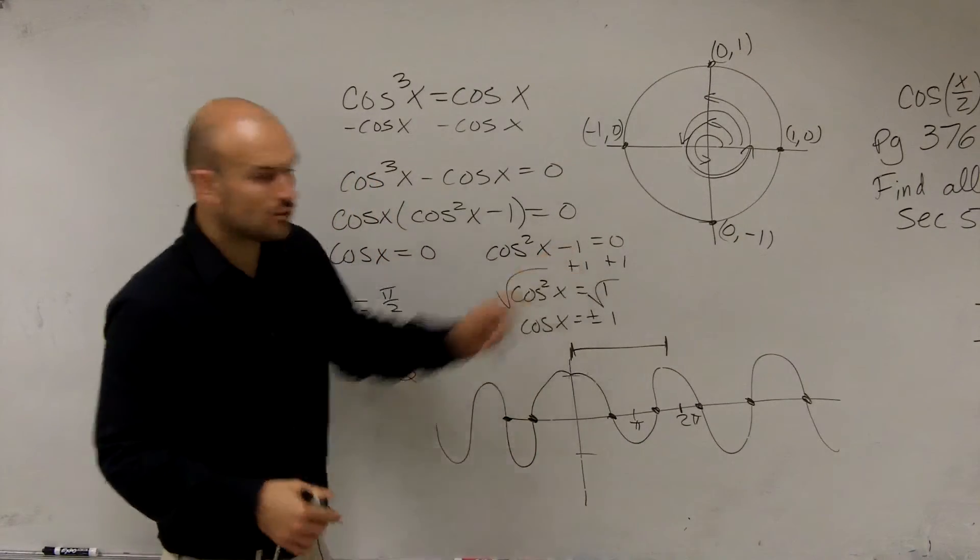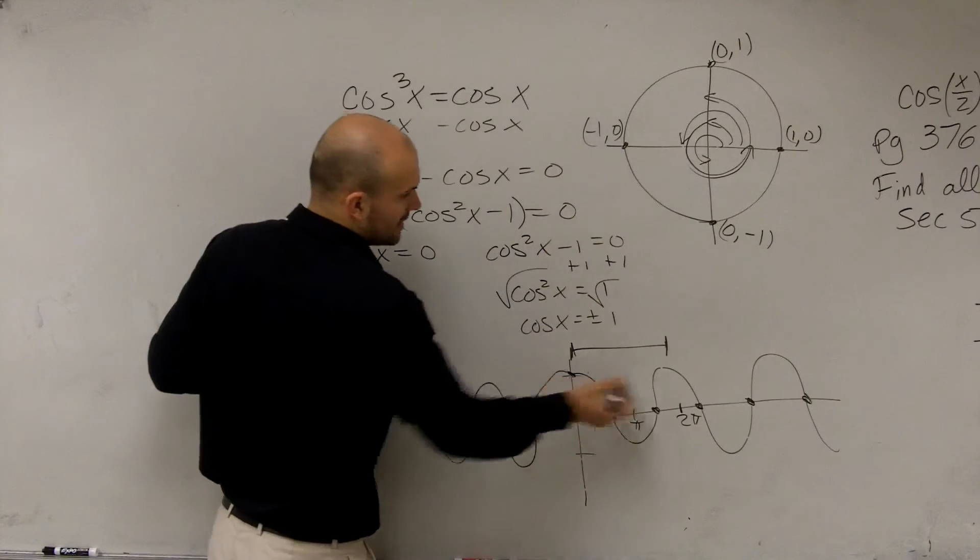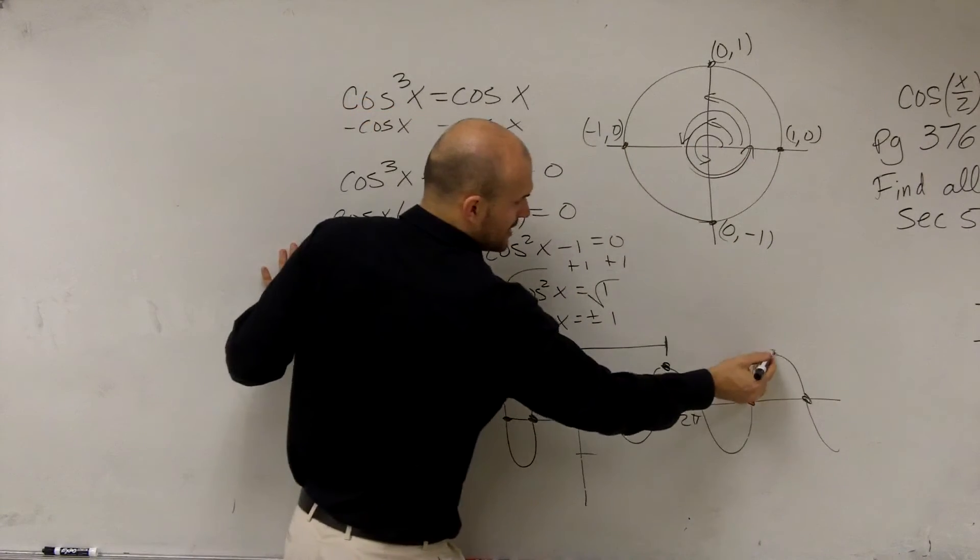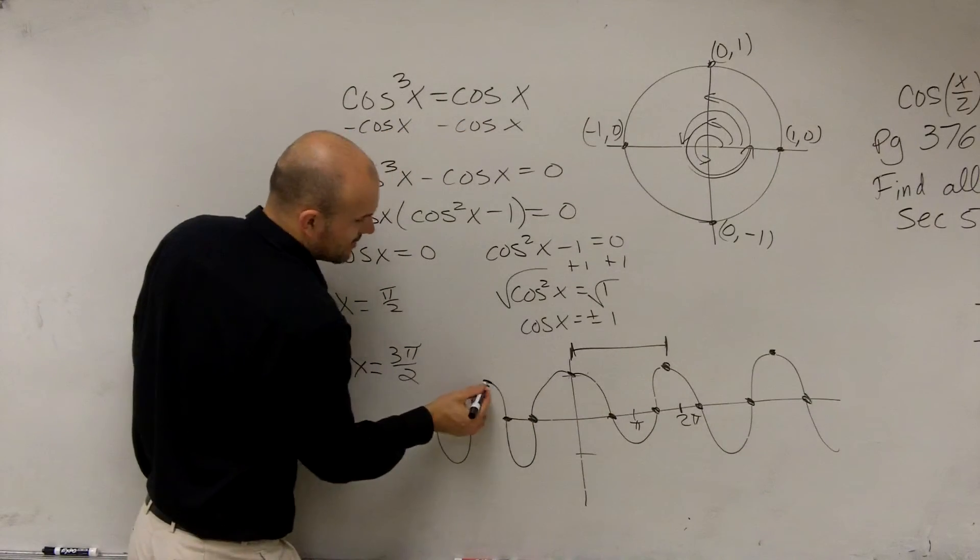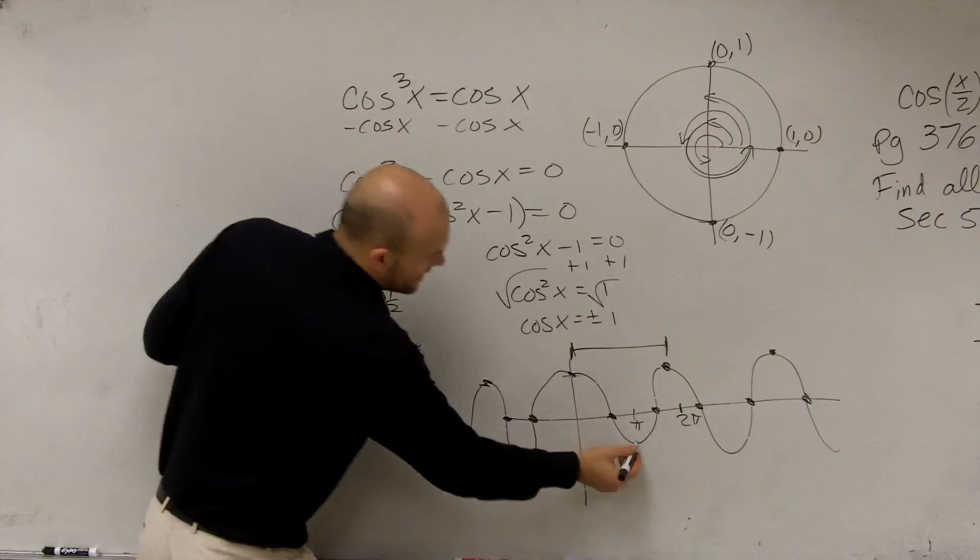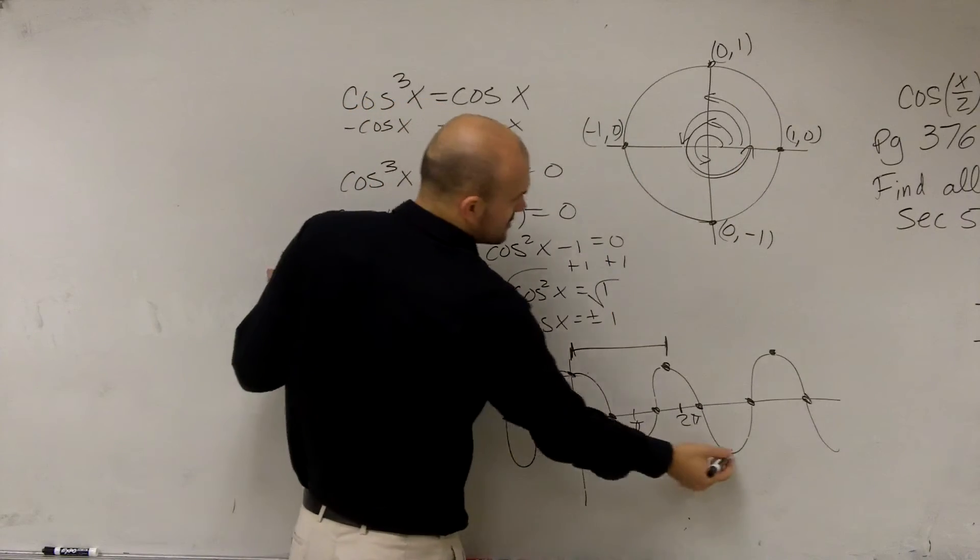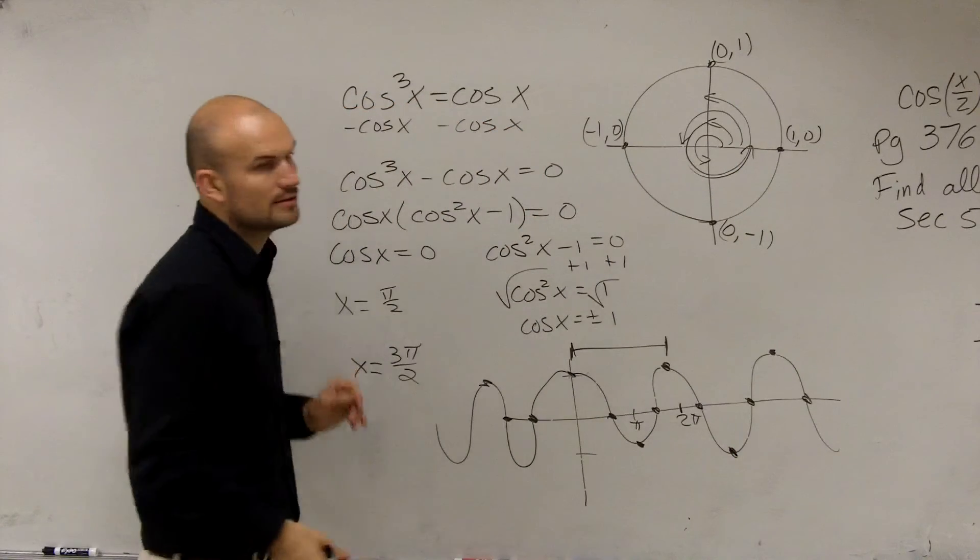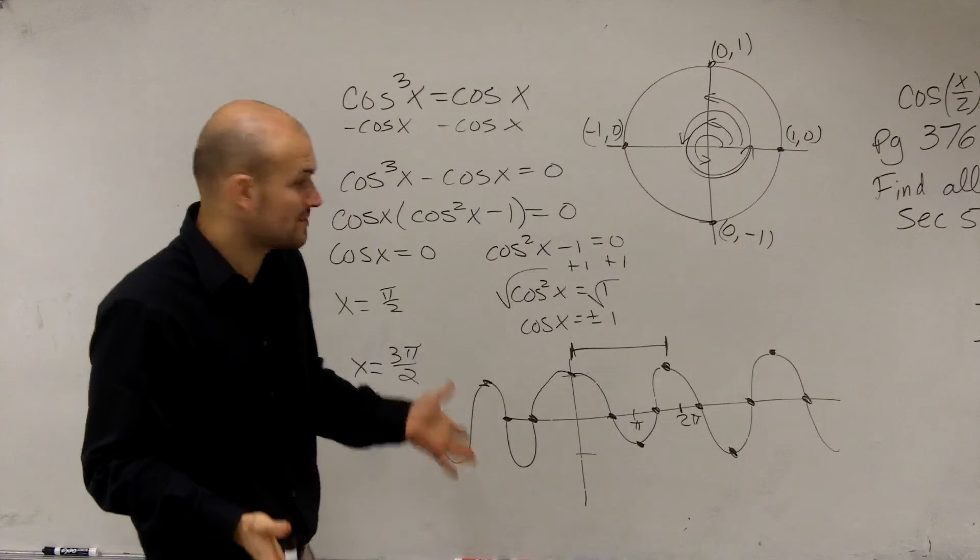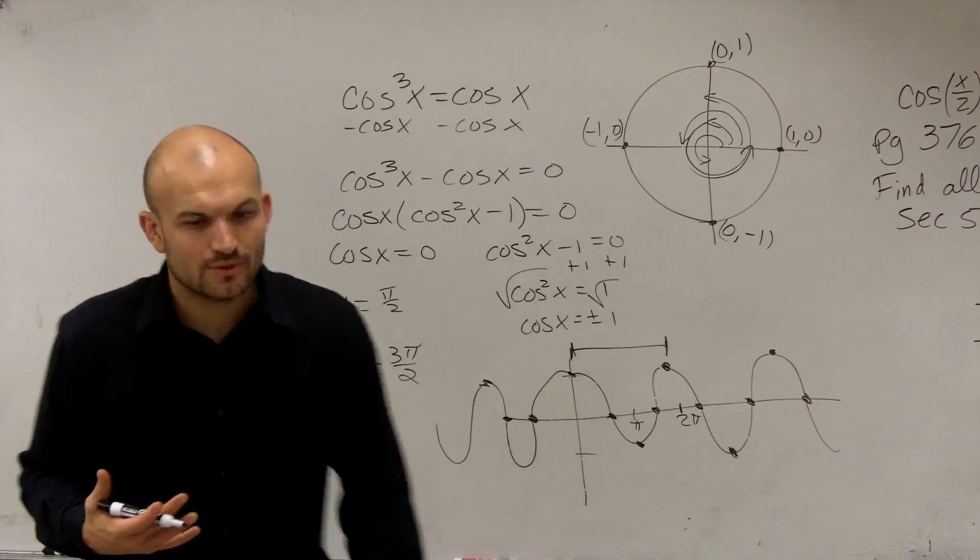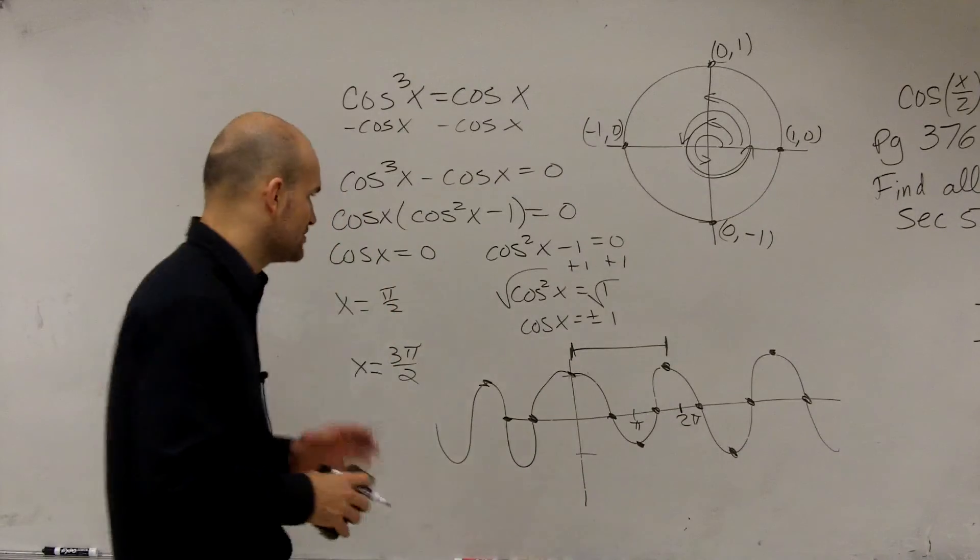When does cosine equal 1? Well, it equals here which was 0. It equals here which is 2π. But it also equals 0 here and here. And it equals negative π here, negative π at π, and then it equals there. So there's all these different angles. It's just not these angles that I've written. We need a way to include all of the solutions.